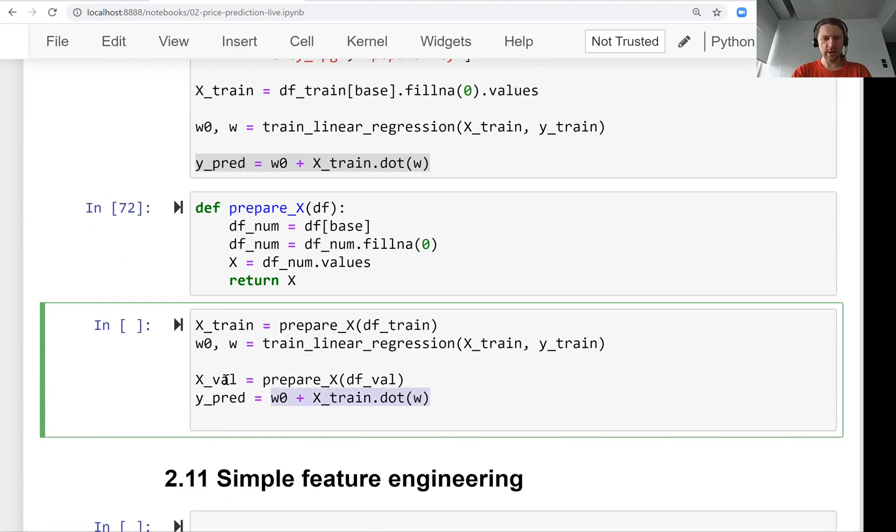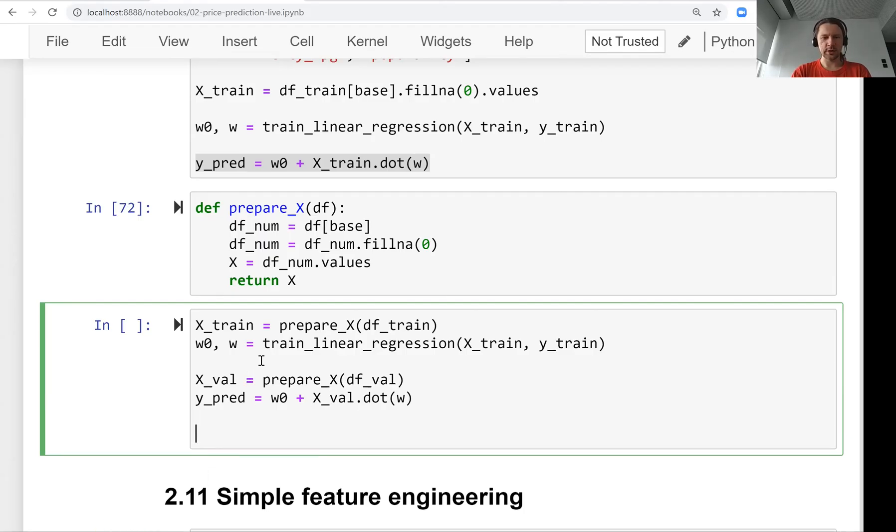And then finally we do predictions. We apply this linear regression—the weights we have—but instead of applying them to the training dataset, we apply them to the feature matrix computed from the validation dataset. This is our prediction. At the end, we compute the root mean squared error: RMSE(y_val, y_pred).